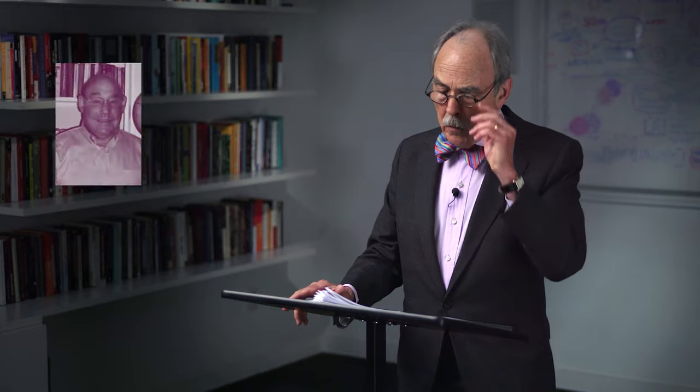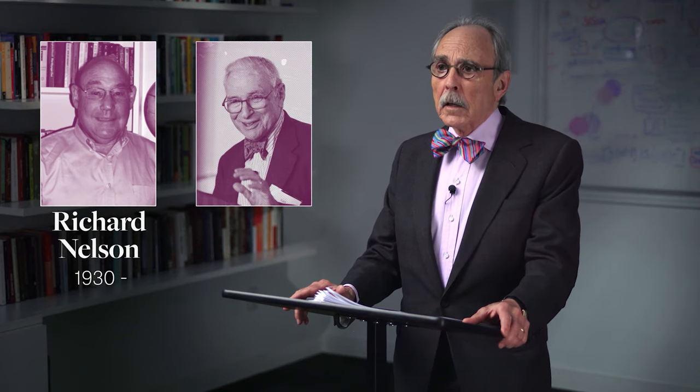Two seminal papers, each published some 60 years ago by two great and very different economists, frame this discussion. The institutionalist economist Richard Nelson and the mathematical economist Kenneth Arrow. We'll begin with Nelson, who asks the right question: how much should we spend on basic research?